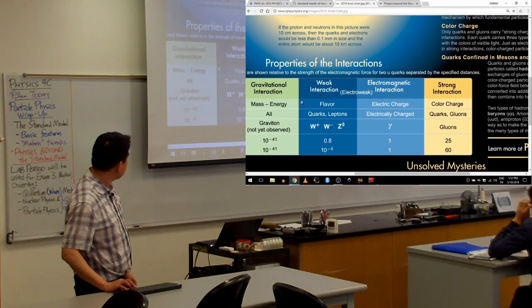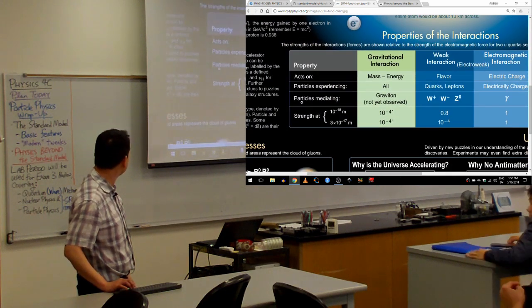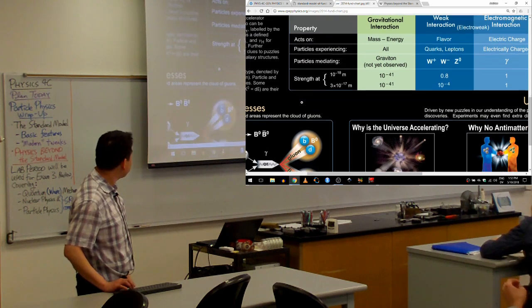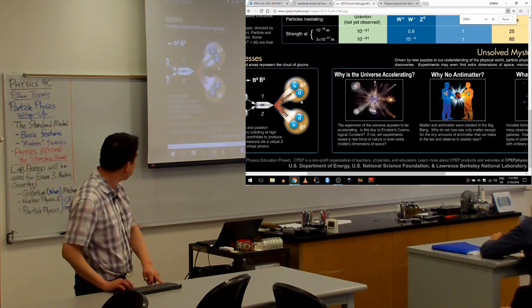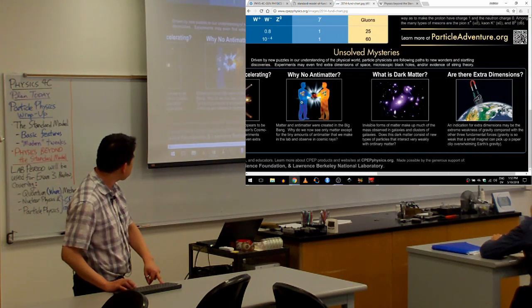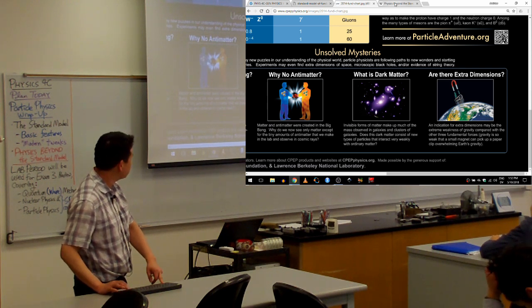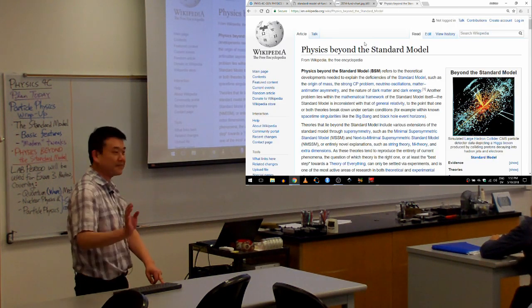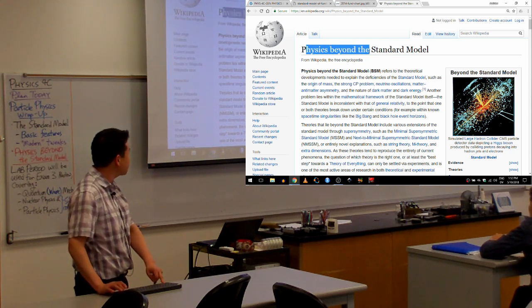And I'm out of time to actually tell you why standard model cannot be the final theory. What's the best way to tell you in one minute? I think the best way to tell you in one minute is this phrase. You can search this on your own. So this is not something I will ever test you on. Search for physics beyond the standard model.